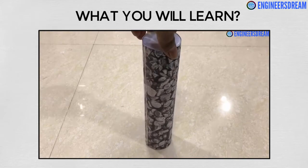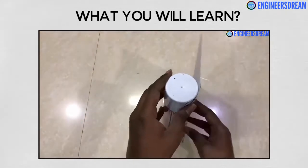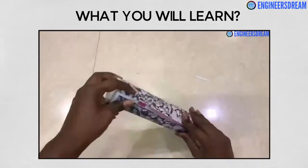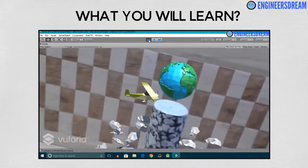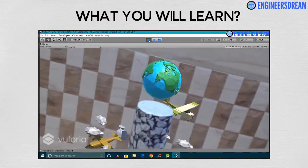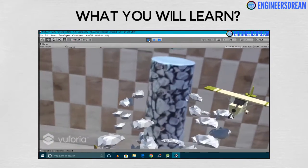In the next section, we will work with cylindrical targets. So in this section, we will first create a cylindrical target and when the target is detected, we will rotate aeroplanes, clouds and Earth 3D models around the cylindrical target.